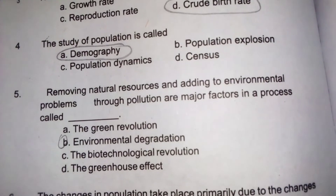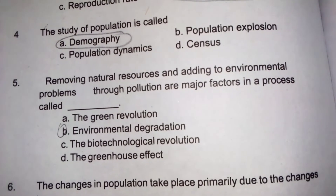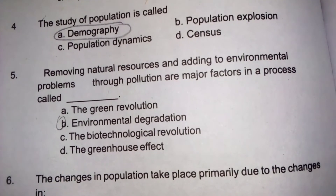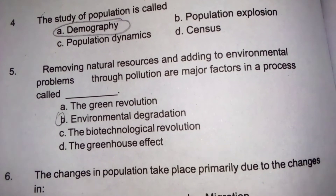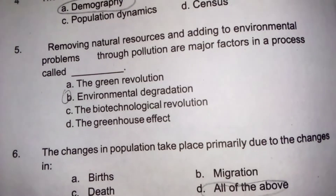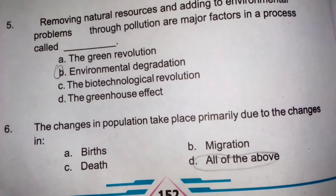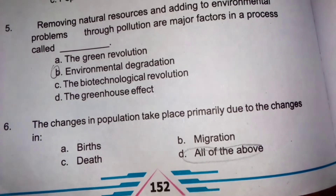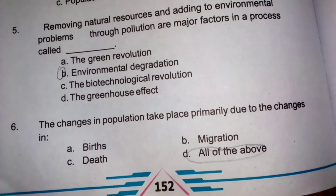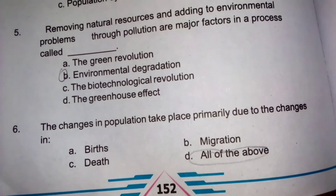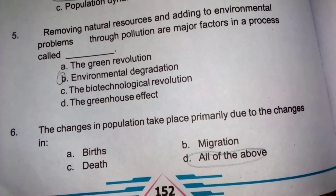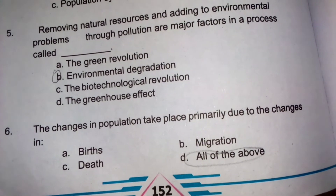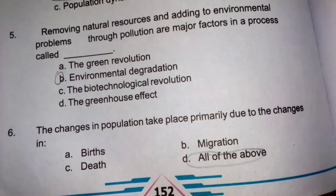Removing natural resources and adding to environmental burden through pollution are major factors in environmental degradation۔ The changes in population take place primarily due to changes in births, migration, and death — all of the above is the correct option.